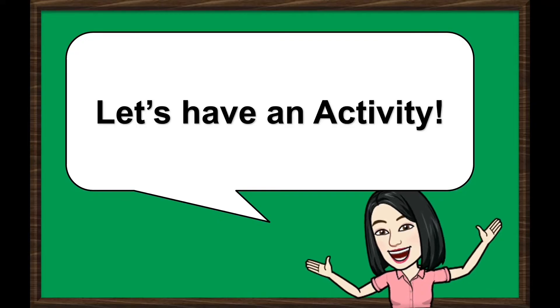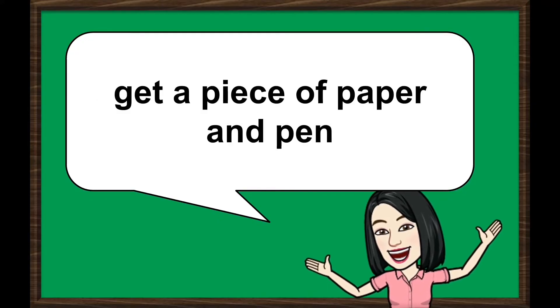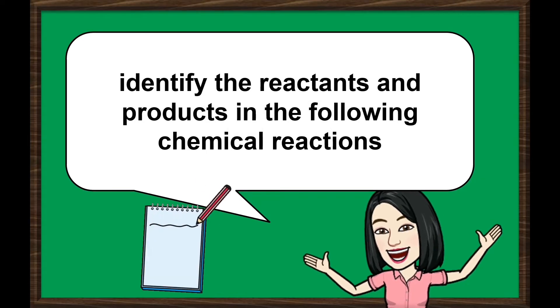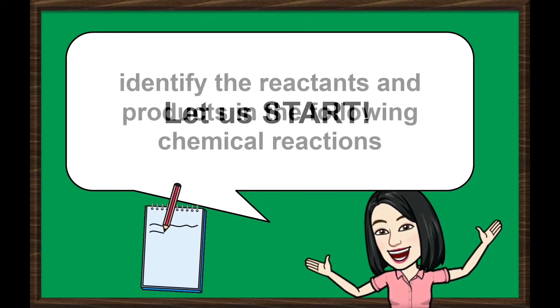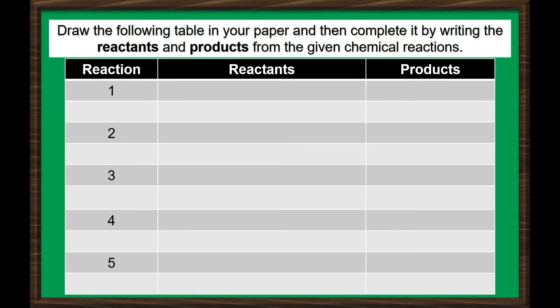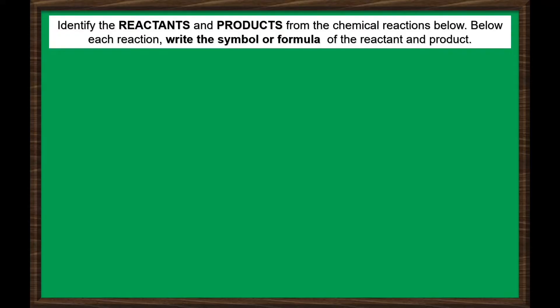Let us perform an activity. Get a piece of paper and a pen. Identify the reactants and products in the following chemical reactions. Copy the following table in your paper and then complete it by writing the reactants and products from the given chemical reactions. Below each reaction, write the symbol or formula of the reactant and product.